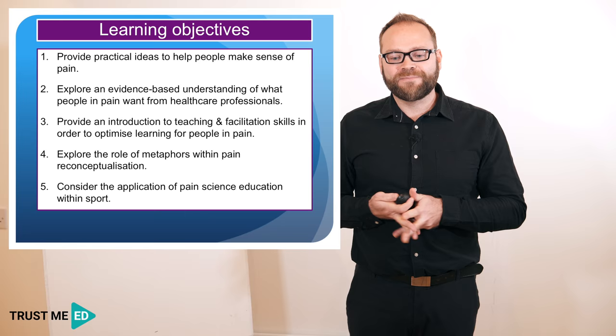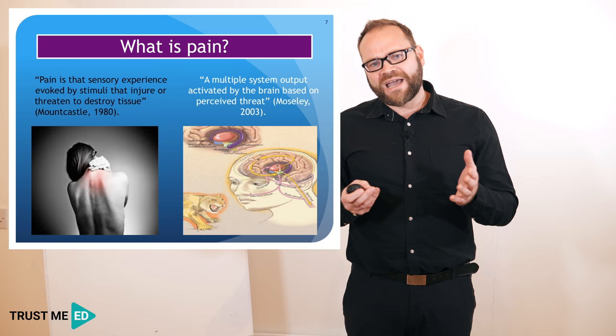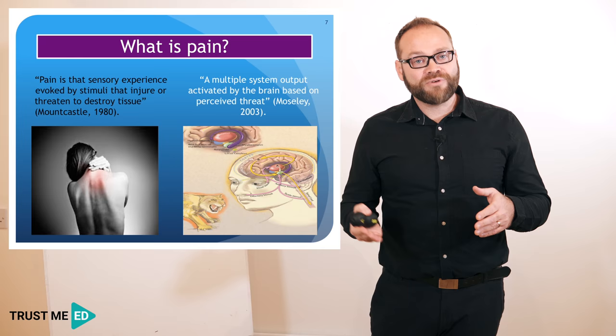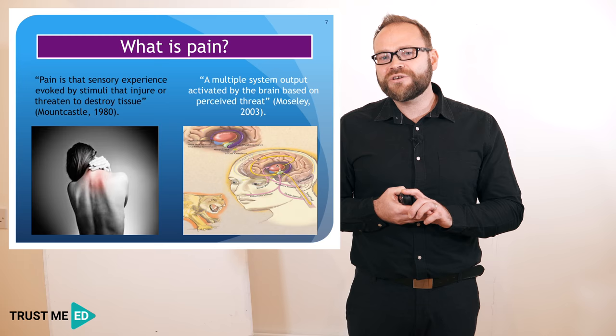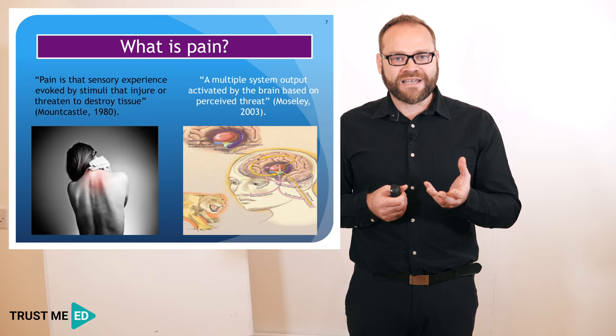A good place to begin is a definition. If we look at these two definitions — from Mountcastle in 1980 and from Lorimer Moseley in 2003 — not a huge space of time separates them, but there is a huge shift in thinking. I often get people on courses to tell me any words that are interesting within Lorimer's definition that highlight that change in our thinking.